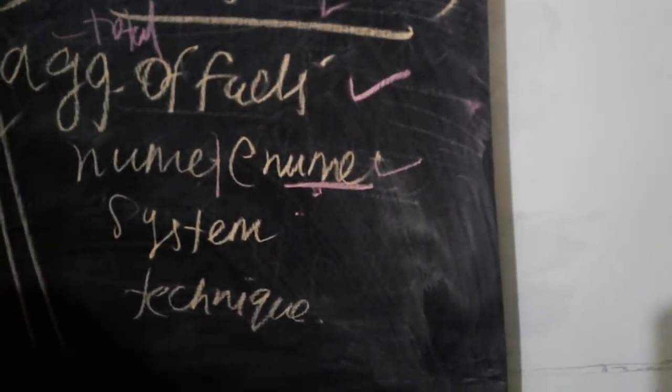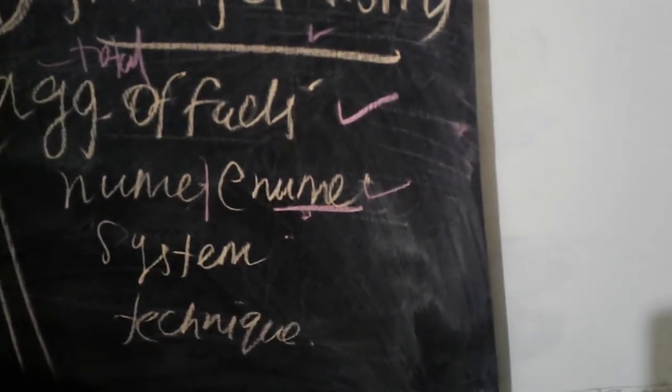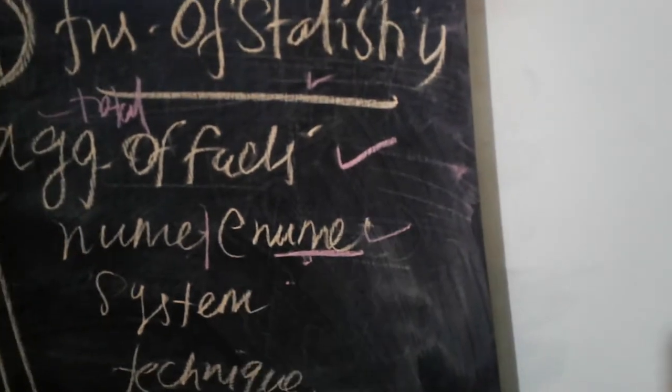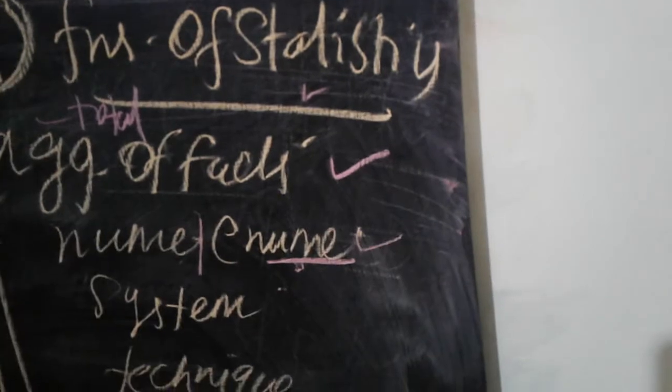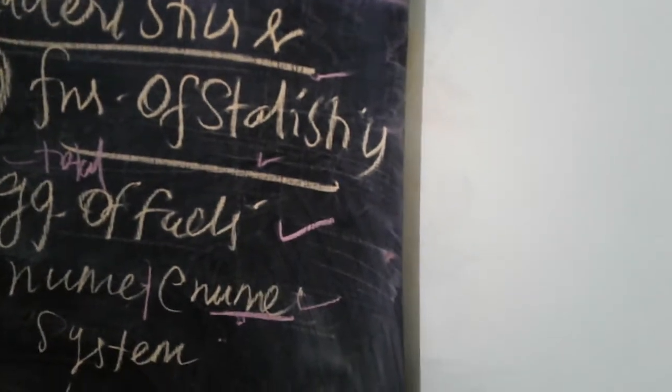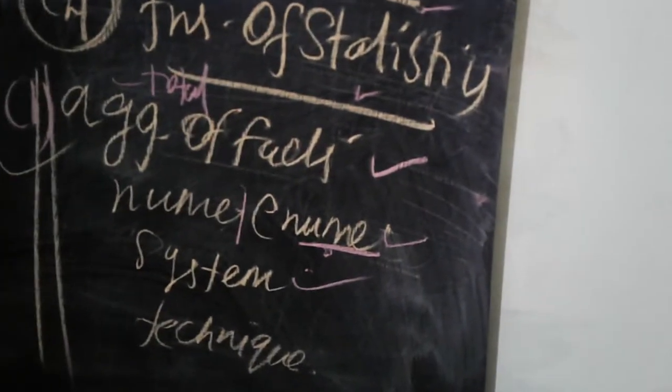And third important thing: statistics collection should be systematic in nature. Systematic in nature, each and every organization already they can present each and every information in a numerical way. Then only it will be easy to understand in a statistical method. So what is the main important thing? Each and every information we are collected here in this numerical way, it will be more accurate in nature also. Perfect in nature.